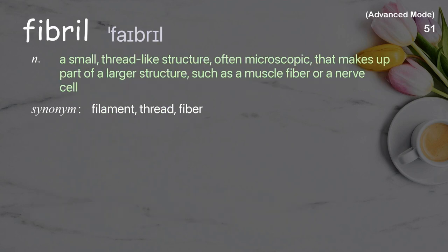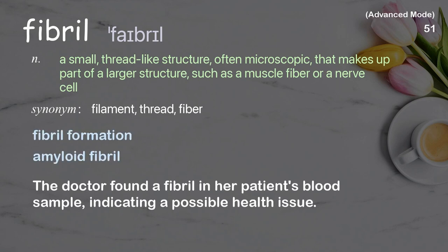Fibril: a small, thread-like structure, often microscopic, that makes up part of a larger structure, such as a muscle fiber or a nerve cell. Examples: fibril formation; amyloid fibril. The doctor found a fibril in her patient's blood sample, indicating a possible health issue.